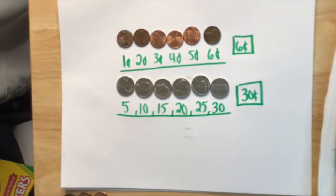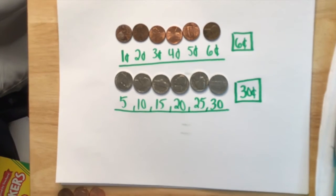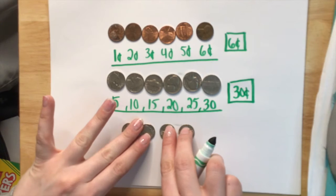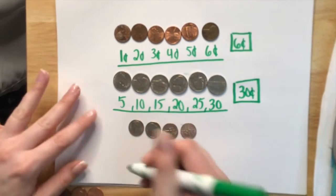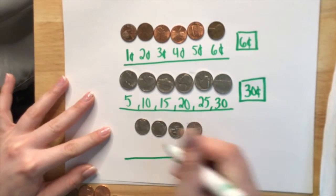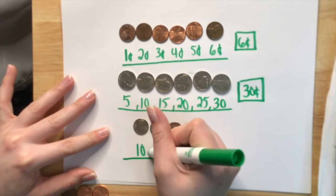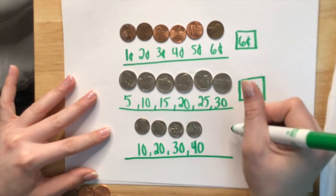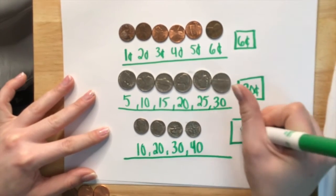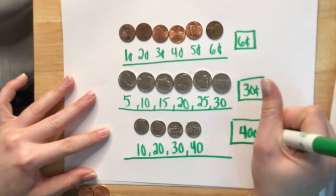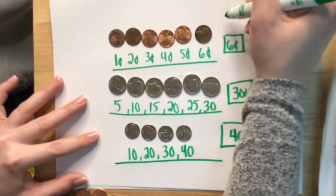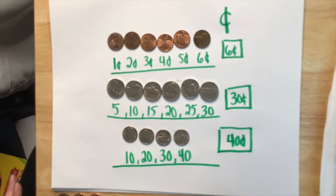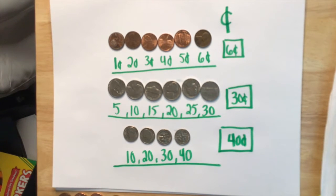Now if we looked at a couple of dimes, when we have dimes, we count them by 10s because we know that a dime now is worth 10 cents. So again, counting by 10s, 10, 20, 30, 40. And we know, then we know we have 40 cents. Now you see how I'm using that cent symbol, the C with the line through it, to show the total amount of numbers that I have there.